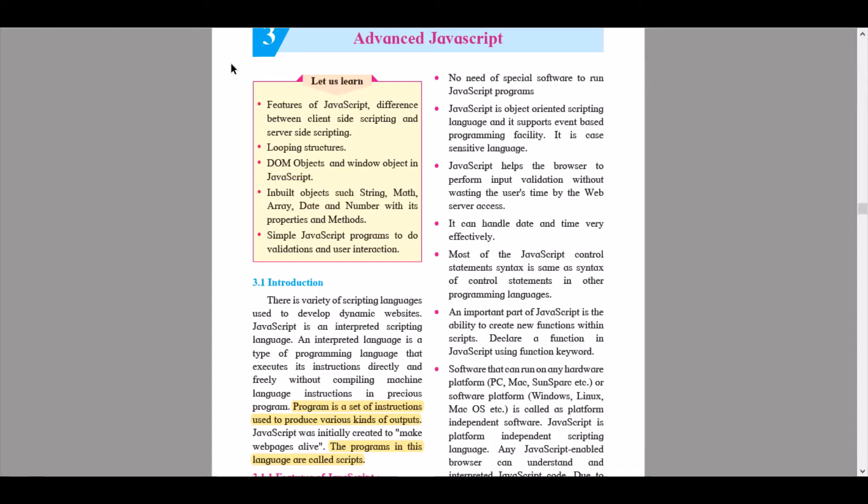So remember that we had learned about client-side scripting and server-side scripting in Unit 1.9 of Advanced Web Designing as just an introductory part. Here we are going to learn what they are and what are the differences between them. Then we continue to pointer number two: looping structures. Then we go to DOM objects and window object in JavaScript.